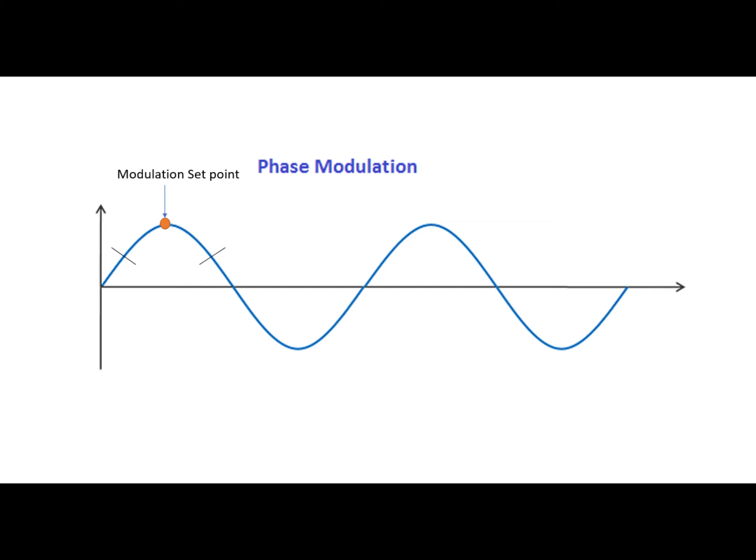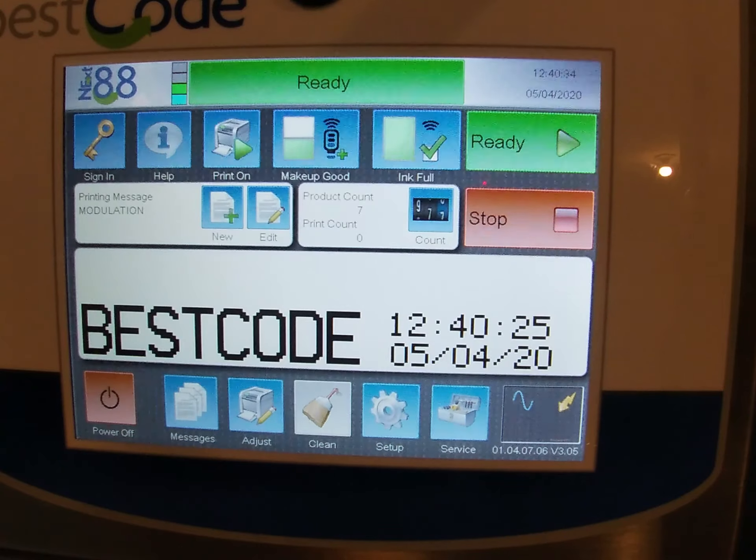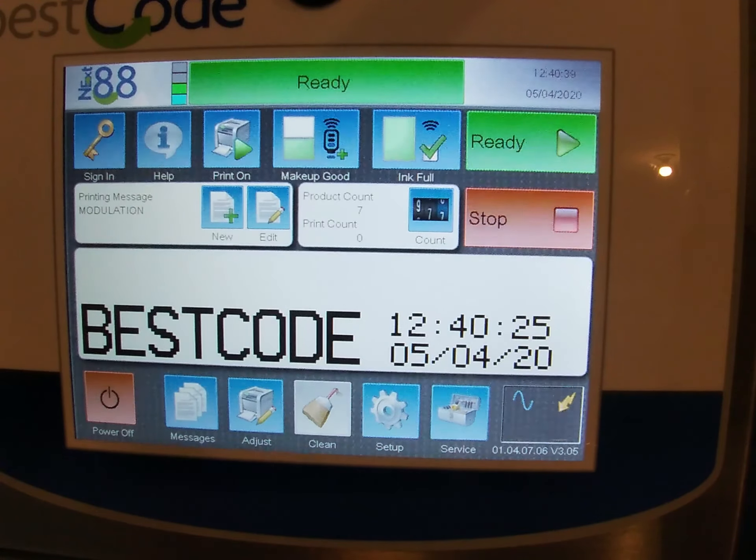So now we're going to set the modulation in the series 8 BestCode CIJ printer. So I've got the jet on and it's in the ready status. And I'm going to sign in, and sign in is going to be gotech G O T E C H. Now it's important to sign in when doing the modulation because when you sign in, it opens up the full range of modulation voltage. When you're not signed in, it's limiting down to 180 volts. So signed in means you can go all the way up to 250.